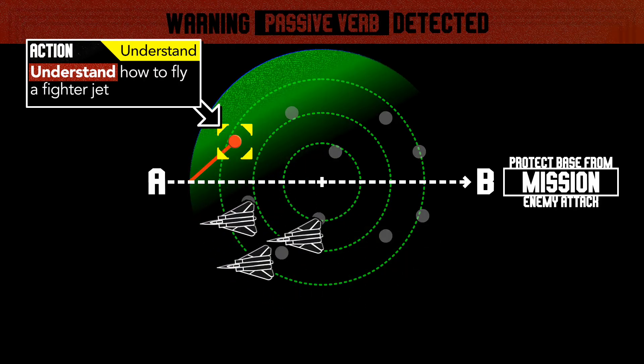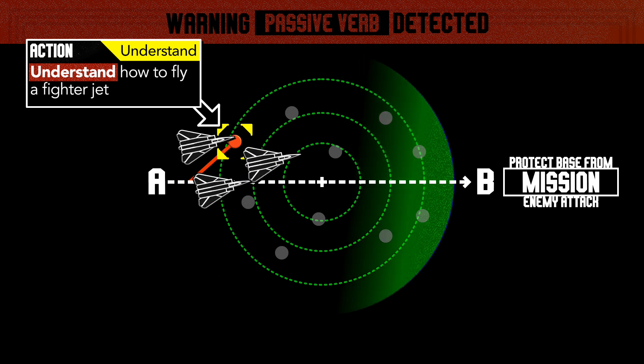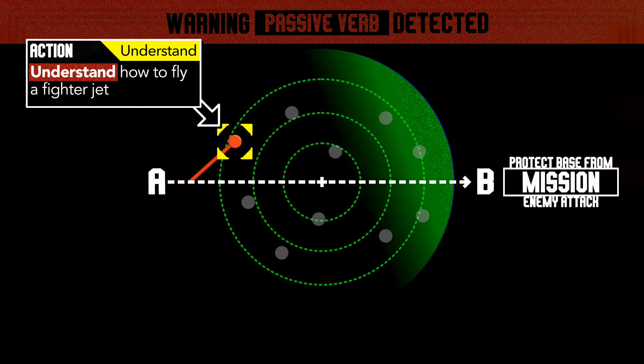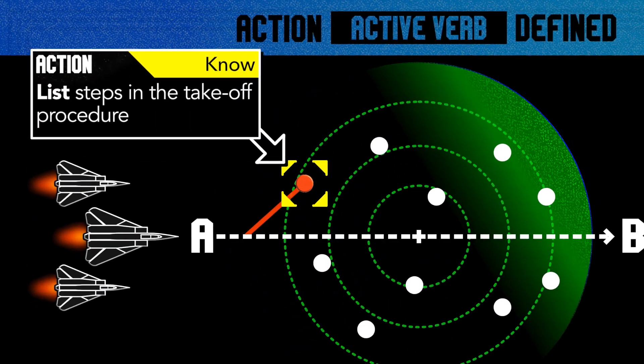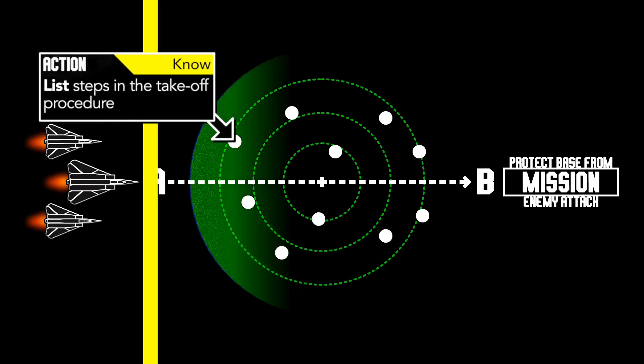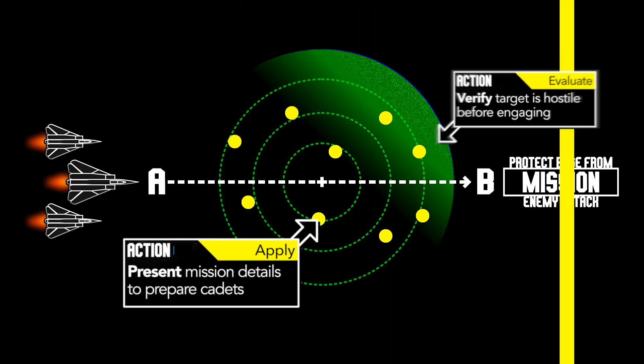Giving passive orders like this will mean different things to different people at different skill levels, and will leave learners circling around the target guessing what they need to do to get the job done, when they should be attacking the problem head on. If we use active verbs like list, compare, describe, present, and verify, however, we start talking the same language and end up setting clear expectations for each action learners need to take.